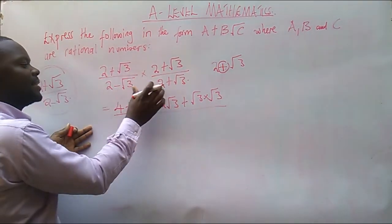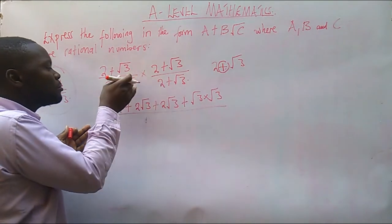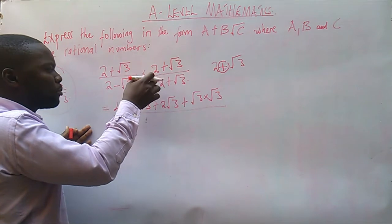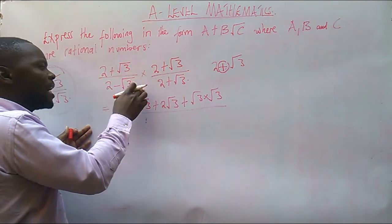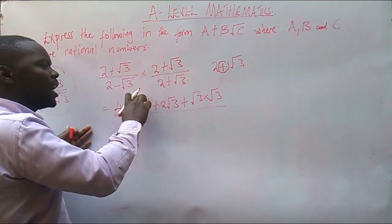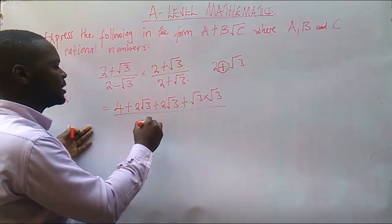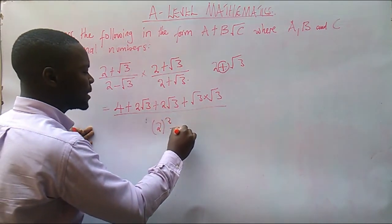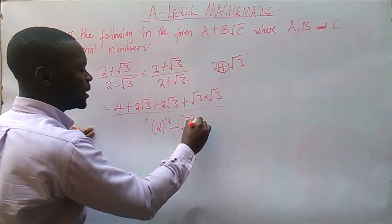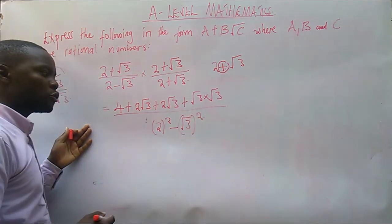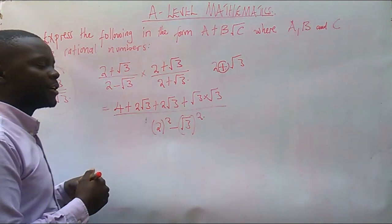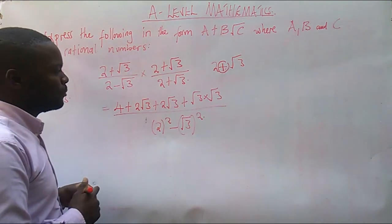this is a difference of two squares, meaning that even if you multiply them, your calculation is the same as saying we have got 2 squared minus root 3 squared. Because it's a difference of two squares. So from here, just a matter of us simplifying our numerator as well as our denominator.